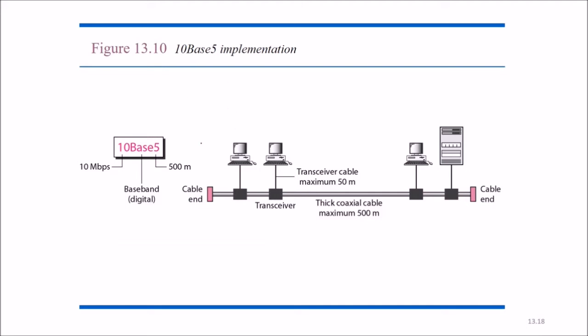This is 10Base5 implementation. That means 10 means 10 Mbps speed, 5 means it goes up to 500 meters, and base means it is a baseband signal, that is a digital signal. So cable ends, these are two cable ends. These are transceivers, means transmitter and receiver. The transceiver cable maximum of 50 meters, and this is a thick coaxial cable maximum of 500 meters. And if you want to send more than that, you can just add one more cable and have a repeater in between.